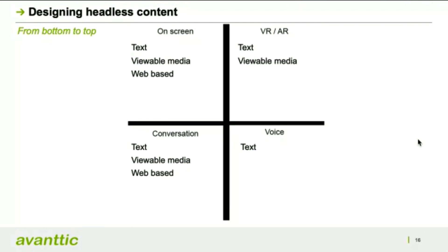Web-based content is obviously most common on-screen but can also appear in conversations — the content management server can respond with a link to a page or an extract from a page. GPS metadata is most commonly used in virtual reality or augmented reality because it allows the experience to be connected with the content. Listening media can appear in virtual or augmented reality and in voice experiences — for example, in the museum scenario it could provide a speech-based description of a sculpture, useful for blind visitors.